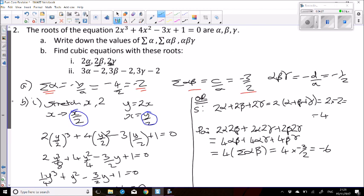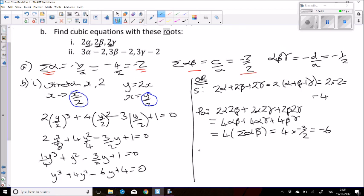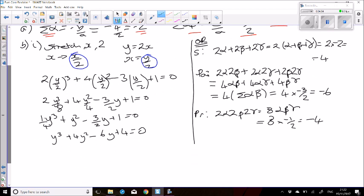And the last thing is to do the product of the new roots. So 2 alpha times 2 beta times 2 gamma, that's 8 alpha beta gamma. And again we know what alpha beta gamma is, so that's 8 times negative 1 half, which is negative 4.